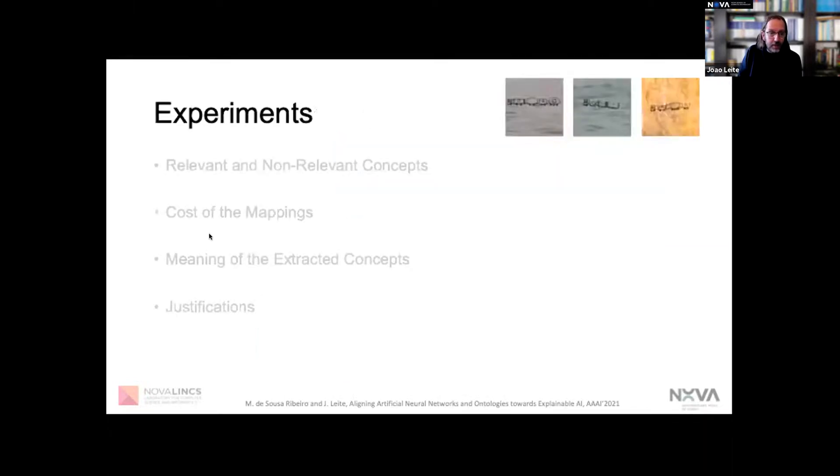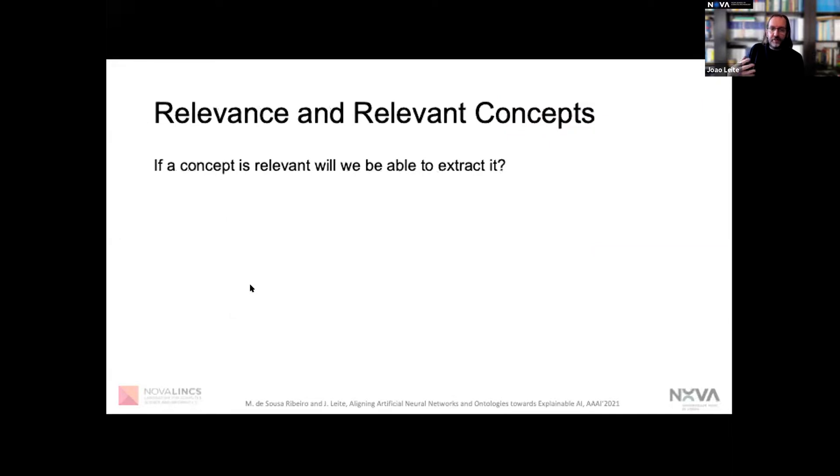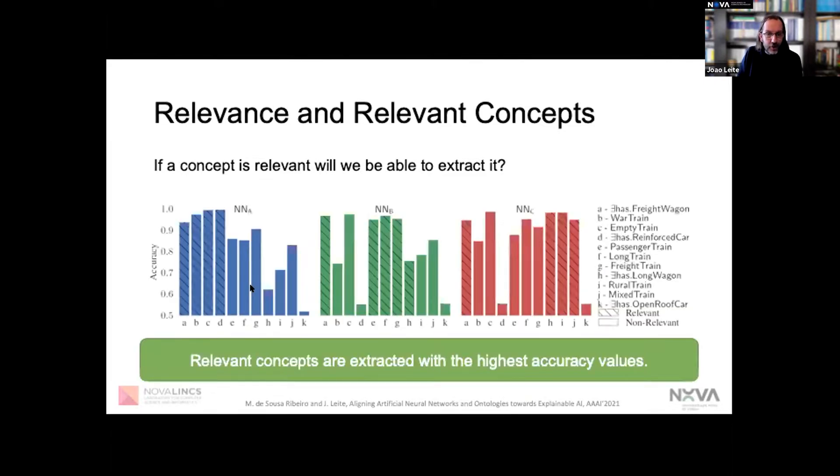In this paper, we conduct several experiments using a synthetic set of images of trains to assess whether actually this method makes any sense. We first tried to show the correctness of our main hypothesis, namely whether relevant concepts are somehow encoded in the model of the neural network.